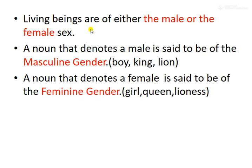Living beings are of either the male or the female sex. Gender-wise, a noun that denotes a male is said to be of the masculine gender — meaning a noun that relates to males, like gents. For example: boy, king, lion — these are male, so we call them masculine gender.